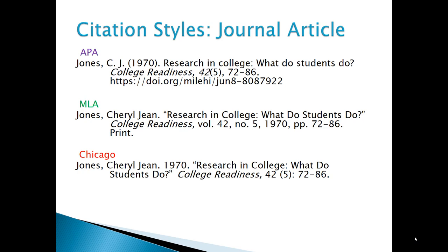MLA provides labels for the volume, issue, and page numbers, but APA and Chicago use punctuation to denote what they are, like a special code. APA requires the use of a digital object identifier, or DOI number, if available, whether the article is in print or an online publication, though MLA and Chicago only want the DOI if that is the format used.